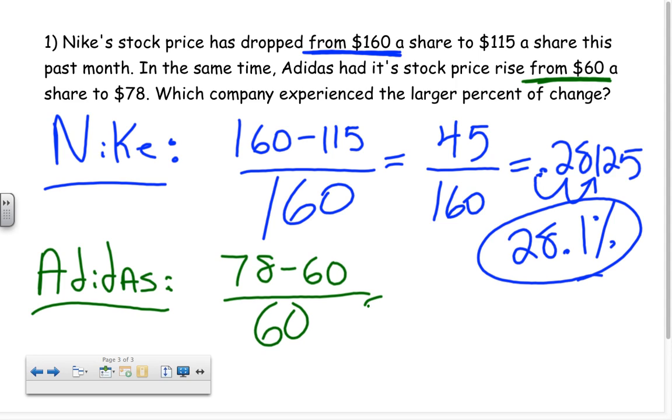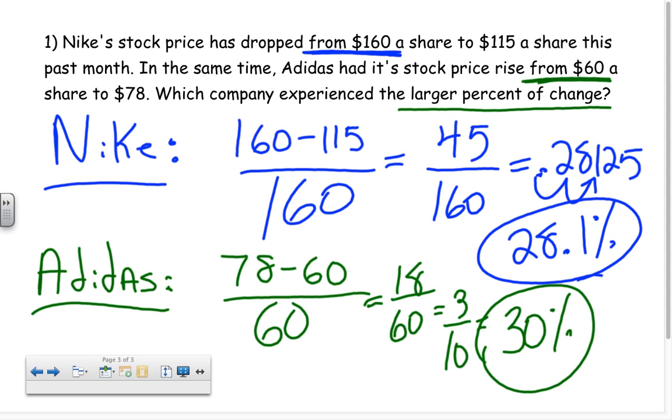When I do some math here, I get 18 over 60. And simplifying that, if I divided both parts by 6, I would get 3 tenths, which as a percentage works out to 30 percent. It would be 0.3, which would then convert to 30 percent. So which company, let's look back at the question, experienced the larger percent growth or percent change here? The answer would be Adidas. Adidas saw a 30 percent change in their stock shares, whereas Nike only saw a little bit over 28 percent.